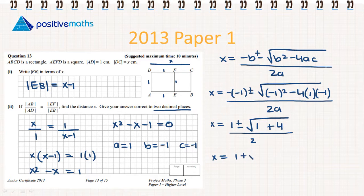So we have x equals 1 plus the square root of 5 over 2, and x equals 1 minus the square root of 5 over 2.